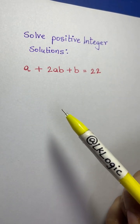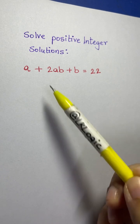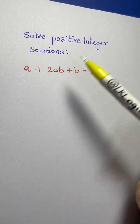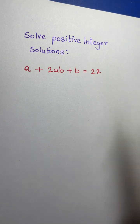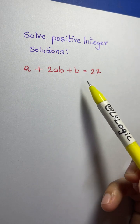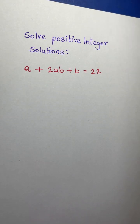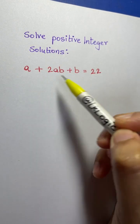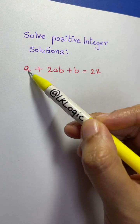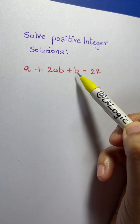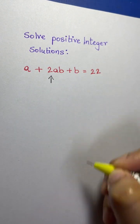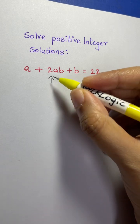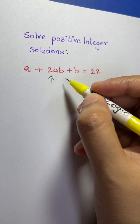In this math olympiad question, we're going to solve for positive integer solutions for a + 2ab + b = 22. How would we solve this two-variable equation? On the left hand side you have two variables, a and b, with coefficient of a as one, coefficient of b as one, and coefficient of ab as two. On the right hand side you have 22.